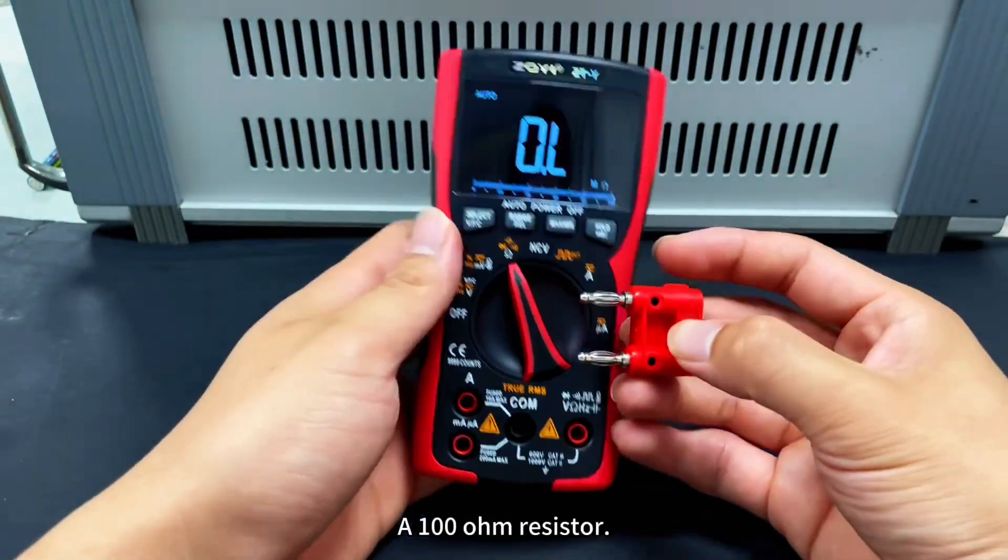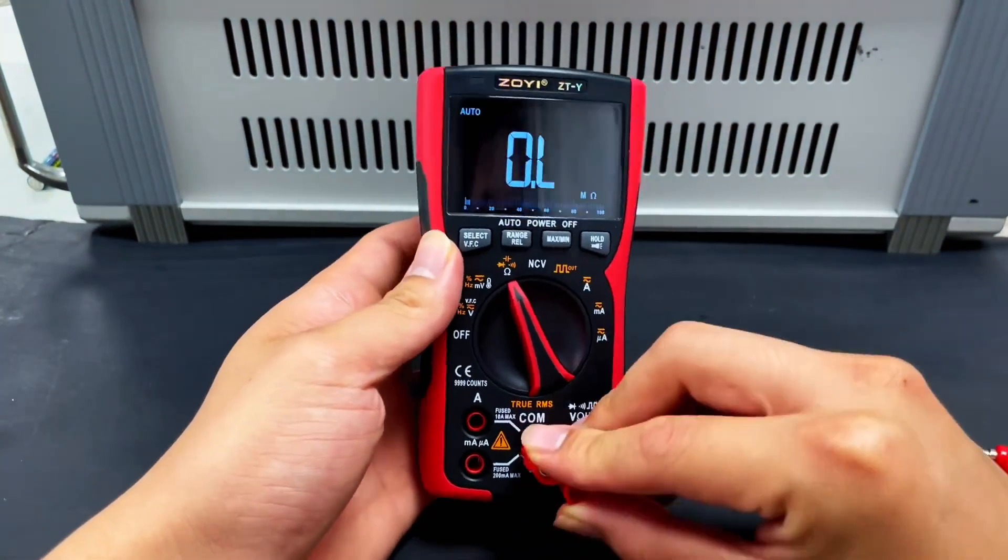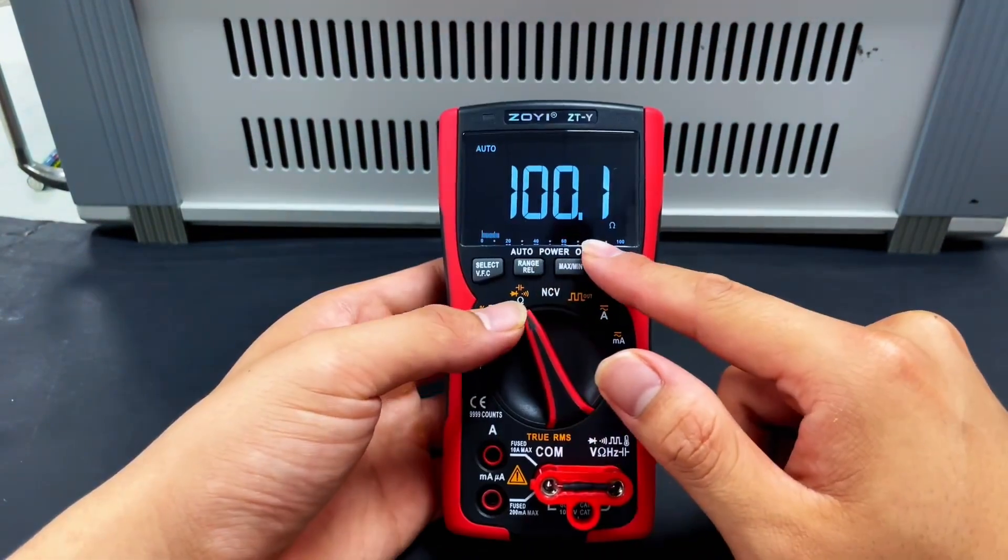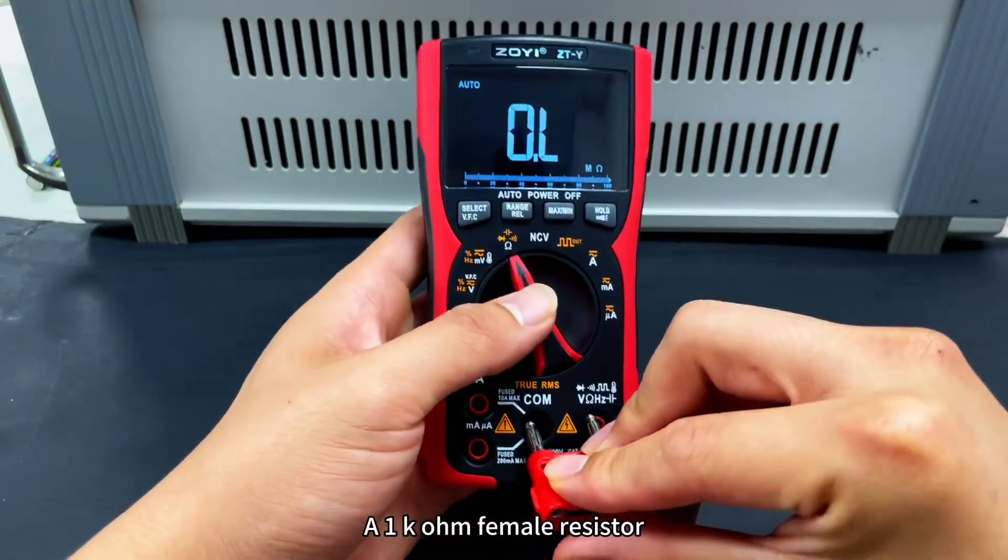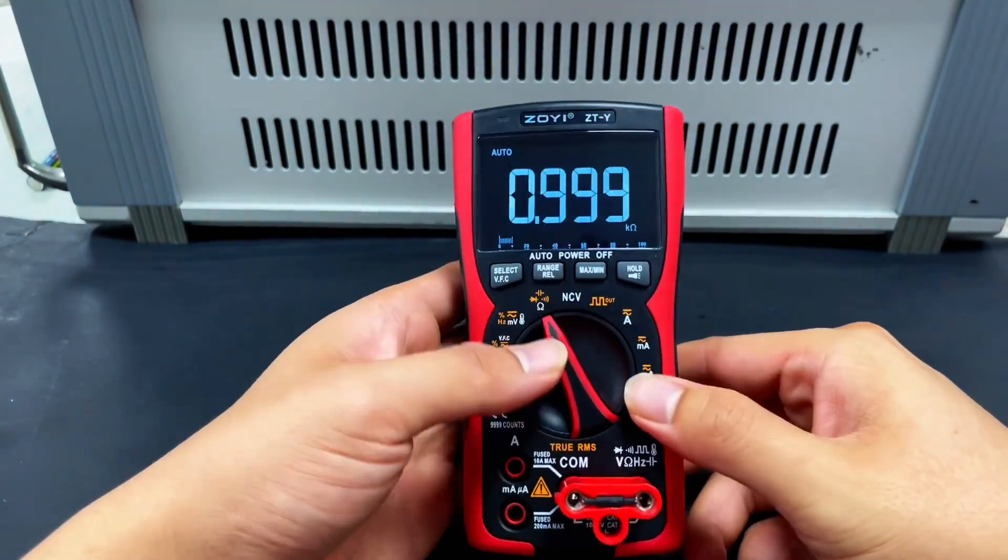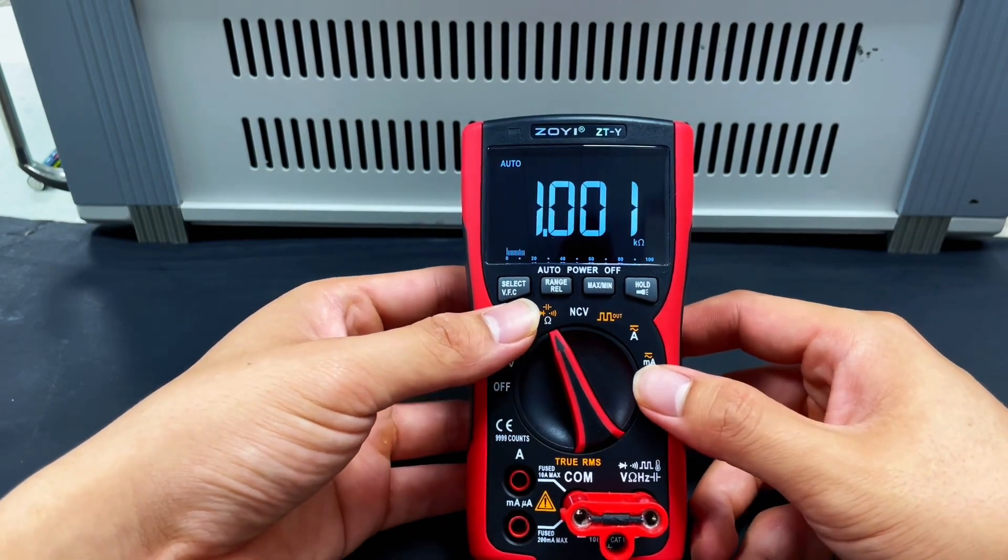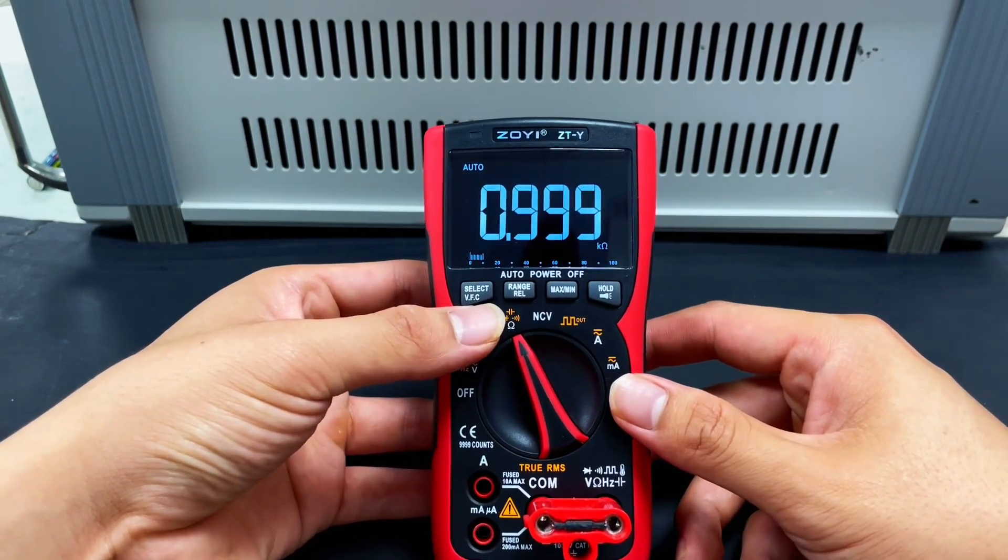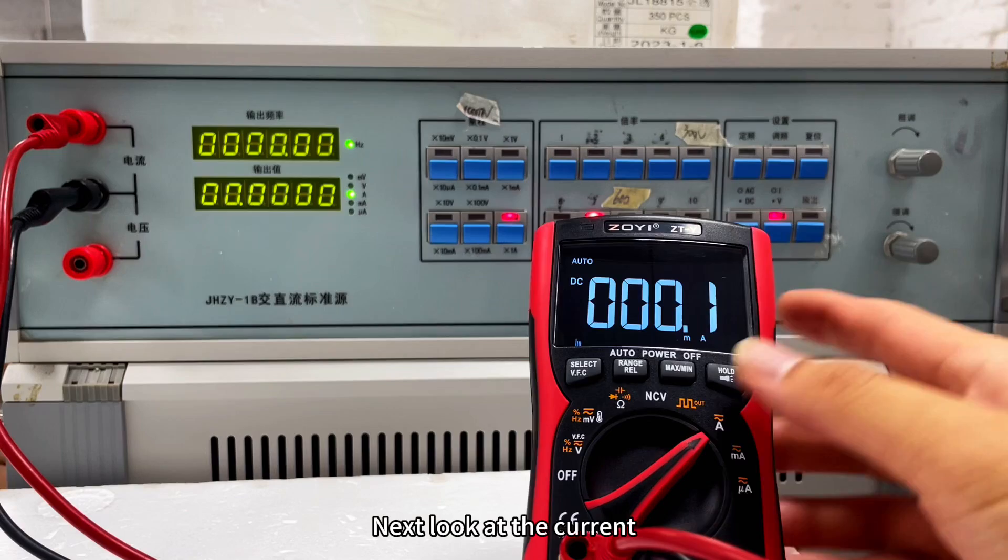Testing a 100 ohm resistor, and a 1k ohm resistor. Next, let's look at the current.